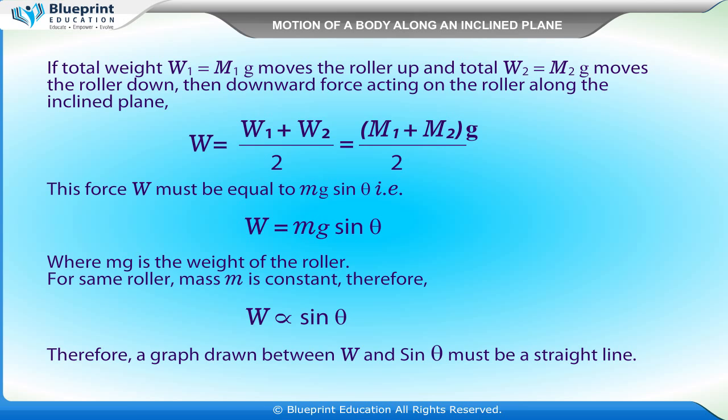Where mg is the weight of the roller, for same roller, mass m is constant. Therefore, W is proportional to sin theta. Therefore, a graph drawn between W and sin theta must be a straight line.